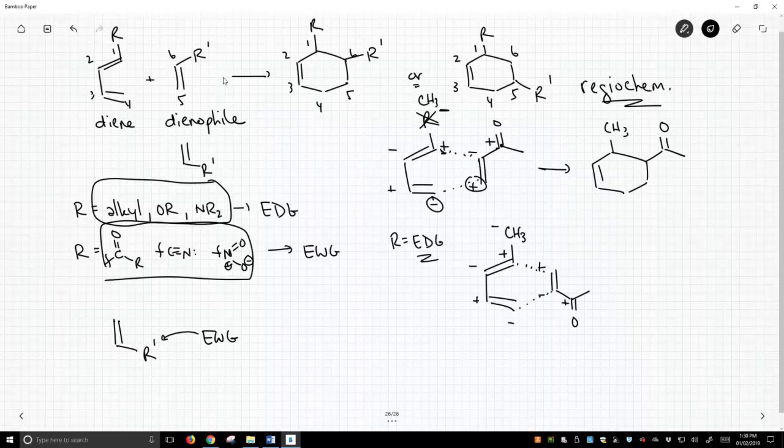If we tried to line things up this way, we'd be pairing the positive charges with each other and the negative charges with each other. That is less favorable because there's electronic repulsion. But that would give us the other regioisomer. This one is the one that's favored.